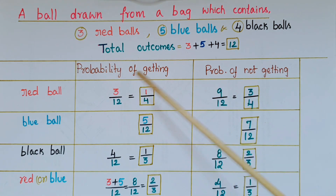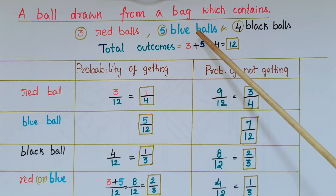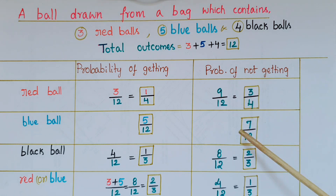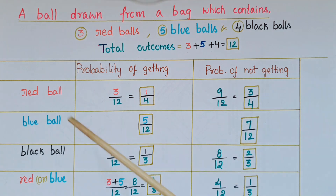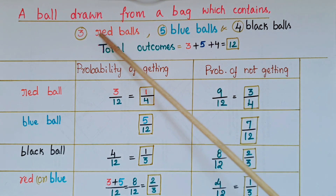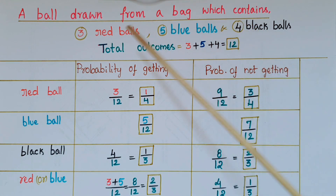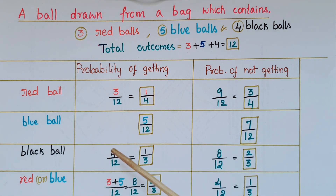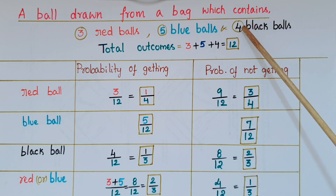Probability of getting a blue ball is equal to five by 12. Probability of not getting a blue ball: except blue balls there are three red balls and four black balls, so three plus four is seven, giving seven by 12.